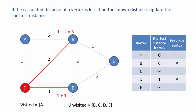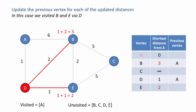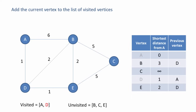If the calculated distance of a vertex is less than the known distance, we update the shortest distance. The shortest known distance from A to B in the table is 6, but we've just calculated a new shortest distance of 3. The shortest known distance from A to E is infinity, and we've calculated a much shorter distance. So we write these values into the table, replacing the previous values. We then update the previous vertex — we visited B and E via D. We add D to the list of visited vertices and won't be visiting D again.